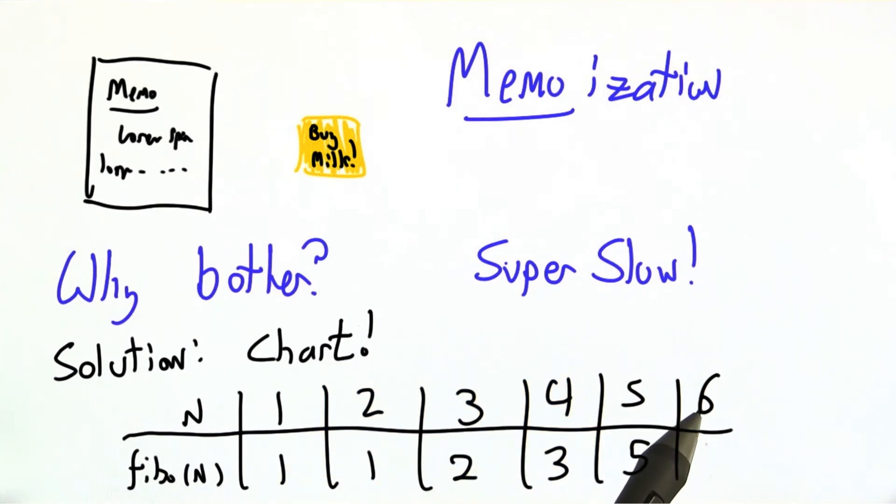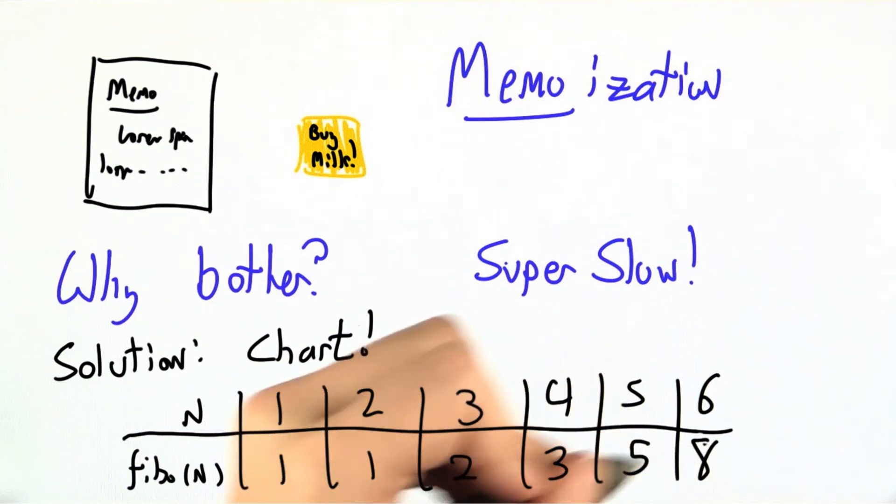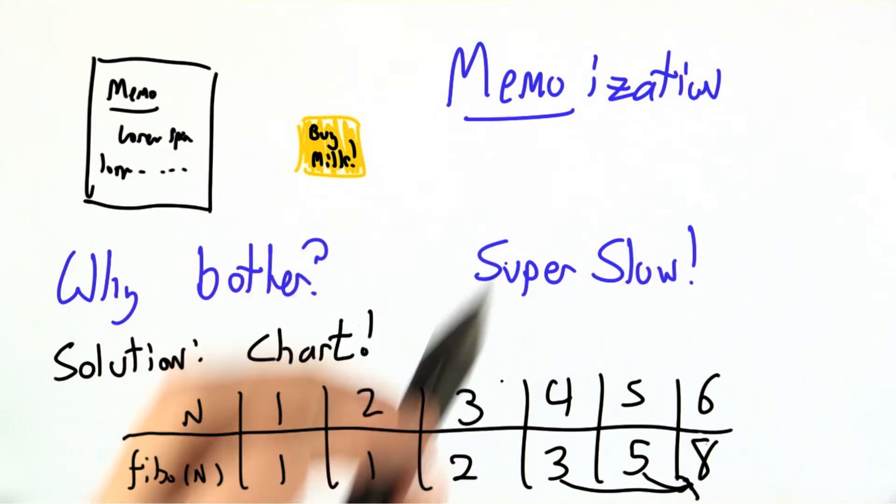Let's say I'm trying to figure out the 6th Fibonacci number. I can just look back in the table and reuse my old work. I don't need to recompute the 5th Fibonacci number. I already have it here. I'll just add those two chart cells together and get the answer. This is going to be our trick for making Fibonacci so much faster. It's called memoization.